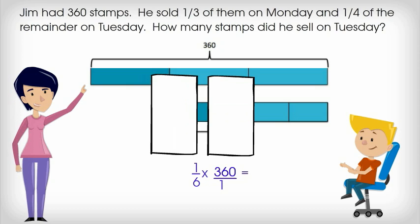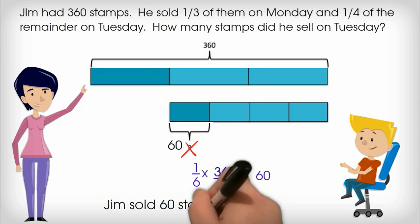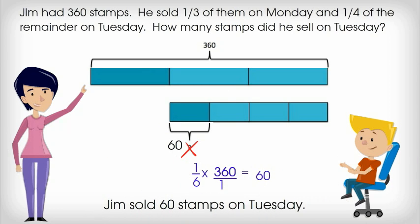Have you solved the problem in your notebook yet? Did you remember to show your work? If so, continue watching the video. If not, pause and solve it now. One sixth times 360 equals 60. We've solved for our question mark. We can now cross it out and fill in the correct amount. Jim sold 60 stamps on Tuesday.